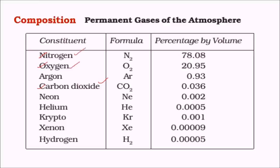Nitrogen is important in stabilizing oxygen. Oxygen is a highly inflammable gas, so if the atmosphere were filled only with oxygen, it would simply be a burning envelope of gases. The abundant amount of nitrogen stabilizes oxygen and does not let it burn under normal conditions. Nitrogen is also a very important nutrient for plants. By volume, nitrogen makes up about 78% of the earth's atmospheric volume, oxygen about 21%, argon about 1%, and carbon dioxide only about 0.03%.